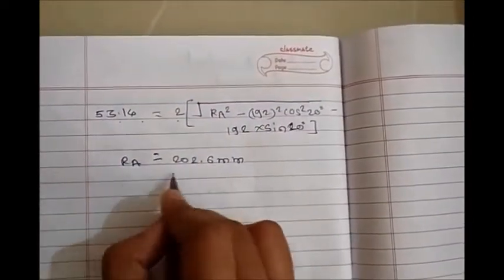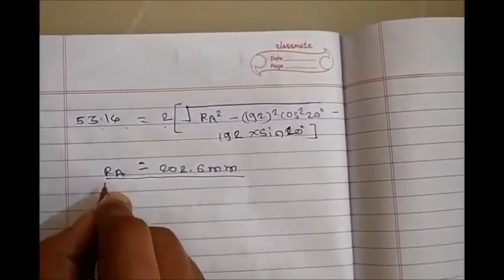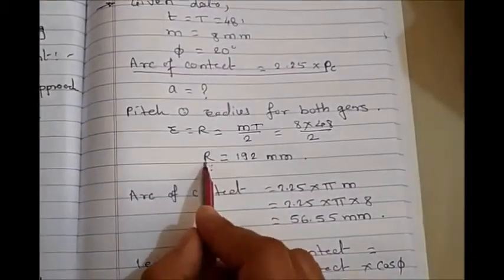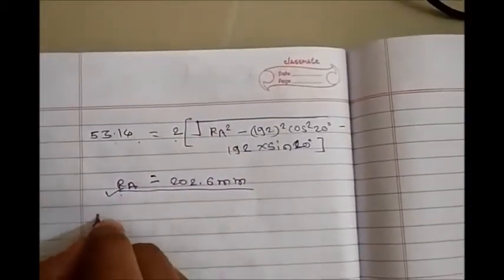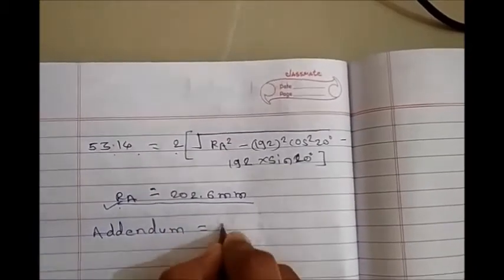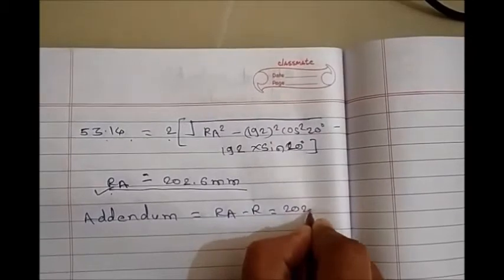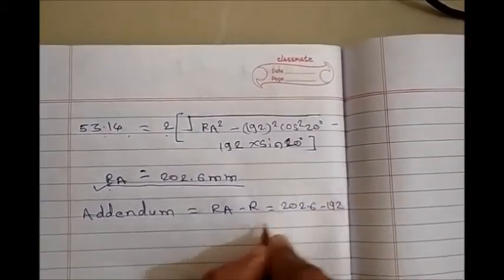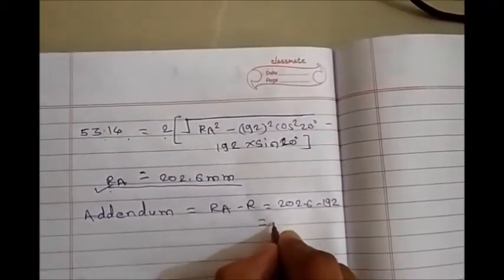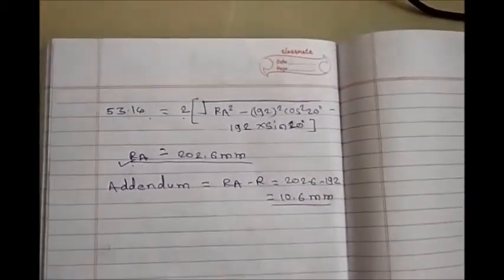After doing this calculation, we get Ra equals 202.6 mm. Now we know Ra and we already know R, so addendum equals Ra minus R, which equals 202.6 minus 192, that is 10.6 mm.